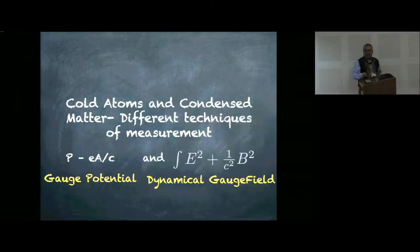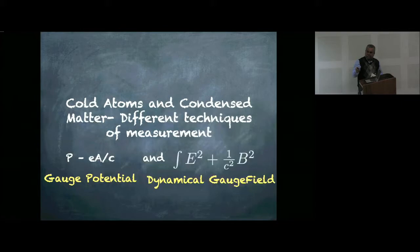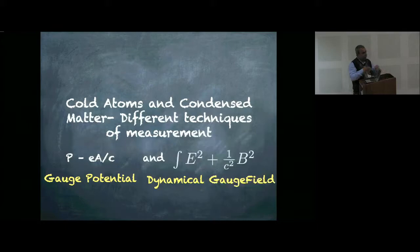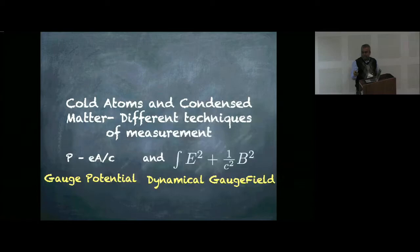If you look at a typical Hamiltonian in the presence of an electromagnetic field, that gives you the momentum operator. In the dynamical sense there is also an energy term which makes the gauge field dynamical, coming from the electric and magnetic field. When you try to realize this concept of gauge potential in some other system there are some subtle differences. I will briefly talk about how we realize such synthetic gauge fields in ultracold atoms and end with some recent work with Purnima.